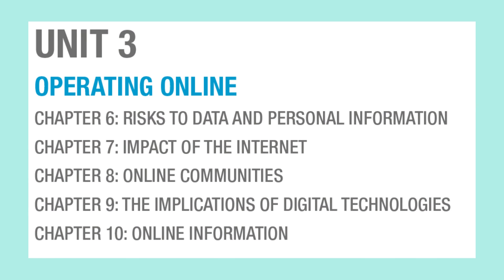In Unit 3, you will learn the risks to individuals and organizations of operating online. There are many benefits because it's online, but you will also learn the risks and problems and how to manage and minimize them. You need to know the impact of the internet on individuals, organizations, and society, and the implications of digital technology use — including legal implications, health and safety issues, best practices, data privacy implications, and copyright implications. You will also learn techniques to secure your data and networks, such as firewalls, encryption techniques, strong passwords, and two-factor authentication.